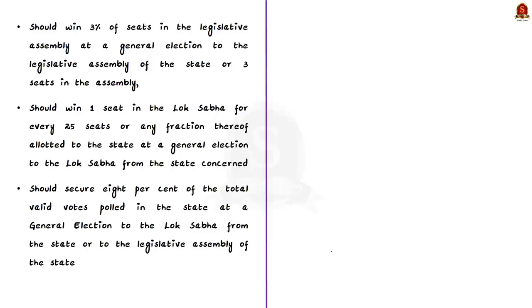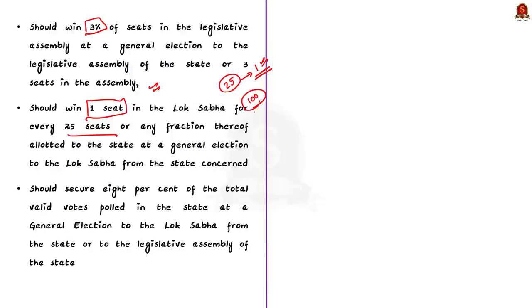The third condition is that the party should win 3% of the seats in the legislative assembly at the general election or 3 seats in the assembly. The fourth condition is that the party should win 1 seat in Lok Sabha for every 25 seats allotted. That is, if only 25 seats are allotted to the state in Lok Sabha, the party should win at least 1 seat. But if 100 seats are allocated in Lok Sabha for the state, then to get regional party status, the political party must secure at least 4 seats in Lok Sabha.